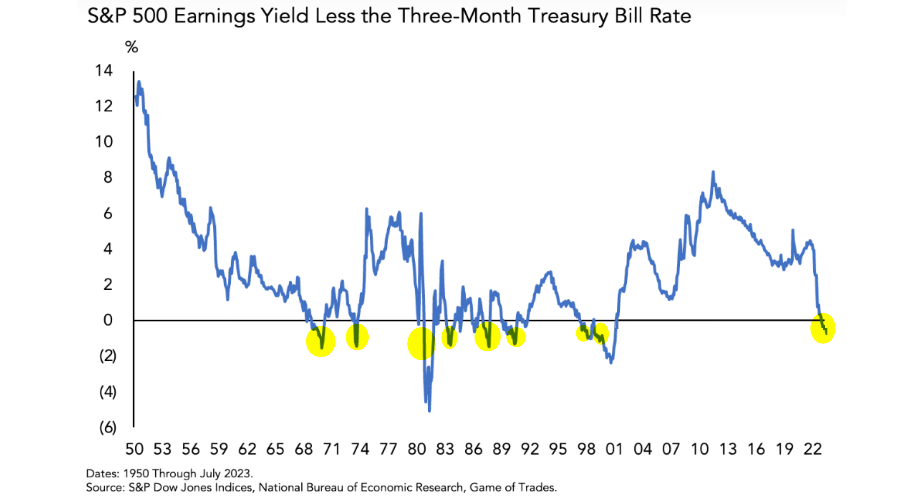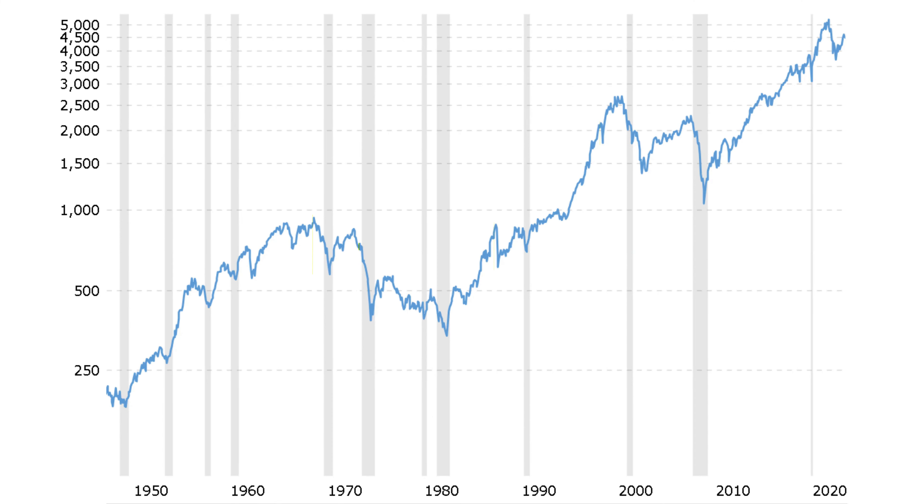In the 8 times the S&P 500 earnings yield has fallen below the 3-month T-bill rate since the 1960s, every single time has signalled a considerable drawdown in the market has been around the corner. To rationalize this: when a risky asset, such as a basket of stocks represented by the market index — in this case the S&P 500 — has less earnings yield than the risk-free asset, why take on the added uncertainty and risk of owning a stock when a T-bill should yield more? An investor looking to deploy capital in a risky asset should aim to purchase when earnings yields are higher and P-E ratios are low — meaning you are buying stocks when they are cheap.